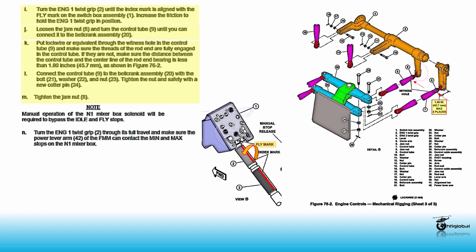Connect control tube 9 to the bell crank assembly 20 with the bolt 21, washer 22, and nut 23. Tighten the nut and safety with a new cotter pin 24. Tighten the jam nut 8.